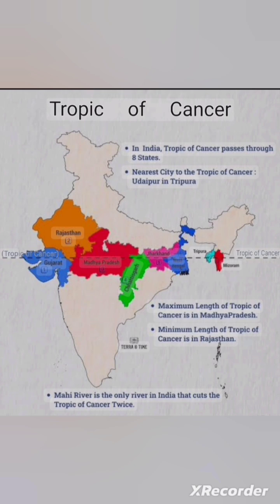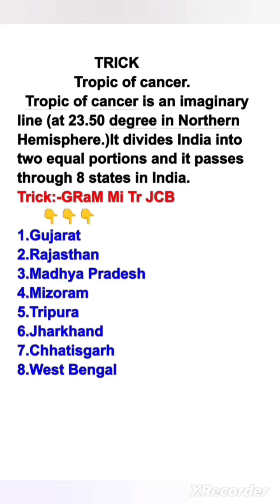The Tropic of Cancer is an imaginary line at 23.5 degrees in the northern hemisphere. It divides India into two equal portions and passes through eight states. The trick to remember these states is: 'Grom May TRJC B' — Gujarat, Rajasthan, Madhya Pradesh, Mizoram, Tripura, Jharkhand, Chhattisgarh, and West Bengal. Thank you, have a nice day.